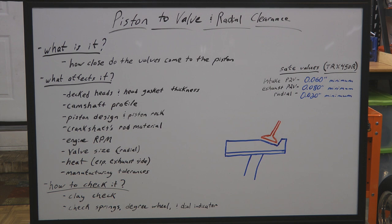So how can we check these clearances? There are two standard ways. The most accurate is to use check springs, a degree wheel, and a dial indicator. A lot of builders will use this method, however that's not the method your normal weekend warrior is going to use. The normal weekend warrior is going to use clay to check the clearances, and that's the method I'm going to focus on in this video.